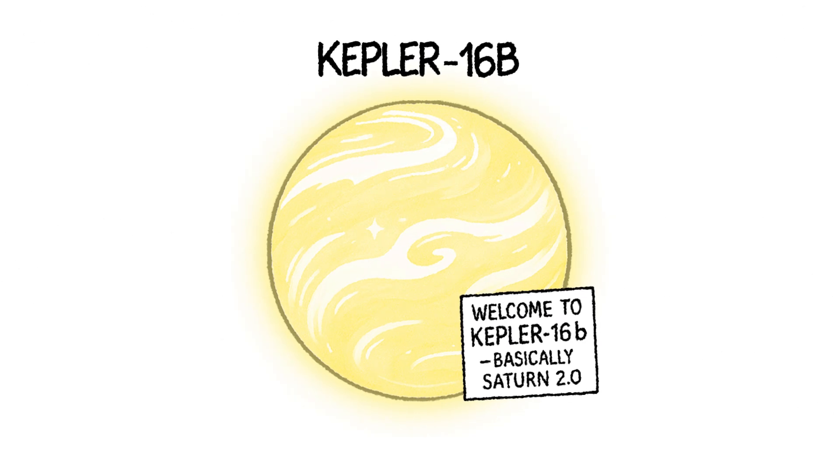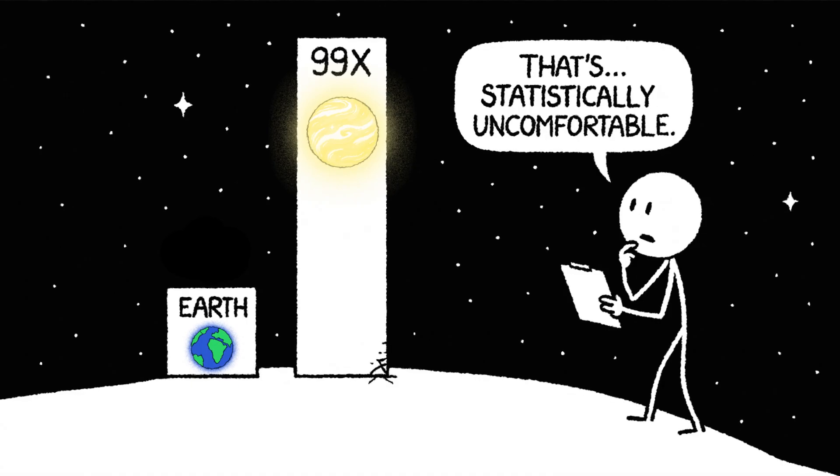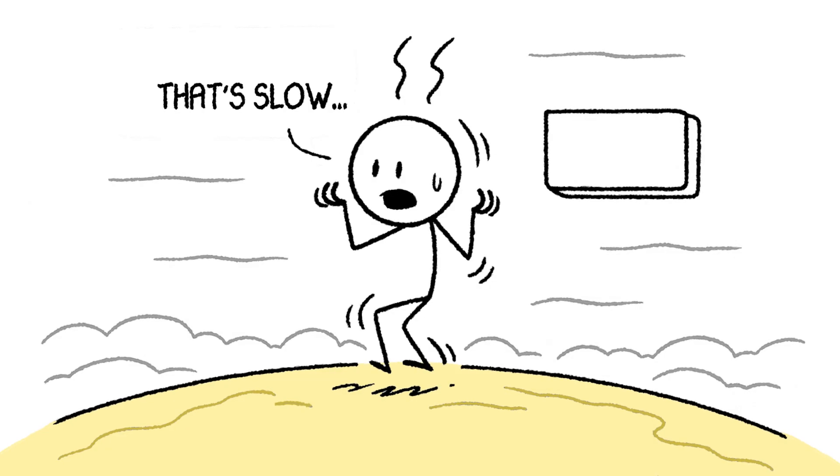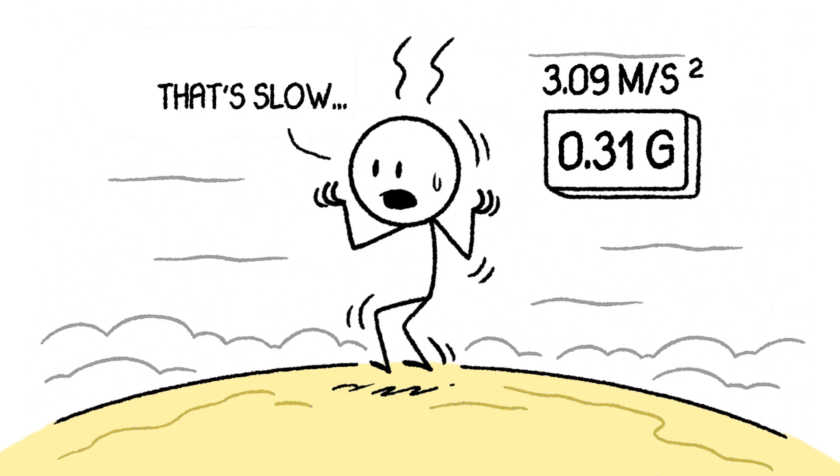Kepler-16b is a gas giant, similar in size to Saturn. It's massive, over 100 times the mass of Earth, but its size means it's also relatively diffuse. Because this world is so voluminous, its gravitational acceleration at the upper atmosphere is surprisingly low, measured at about 3.09 meters per second squared.